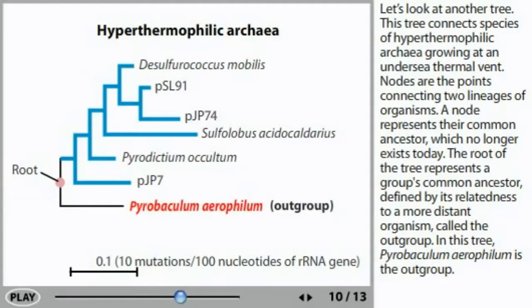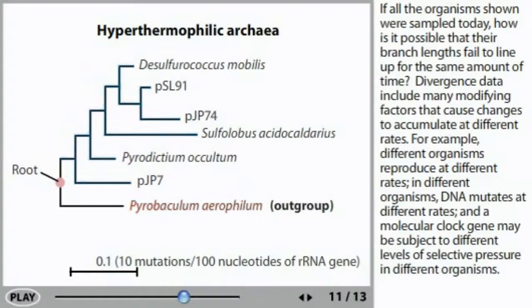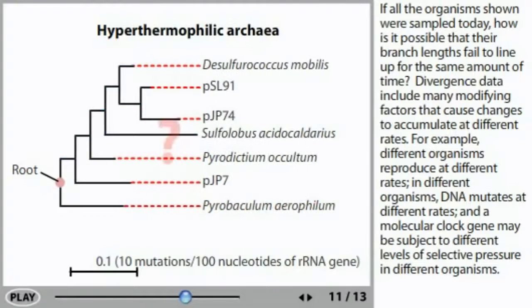In this tree, Pyrobaculum aerophilum is the outgroup. If all the organisms shown were sampled today, how is it possible that their branch lengths fail to line up for the same amount of time? Divergence data include many modifying factors that cause changes to accumulate at different rates. For example, different organisms reproduce at different rates. In different organisms, DNA mutates at different rates. And a molecular clock gene may be subject to different levels of selective pressure in different organisms.